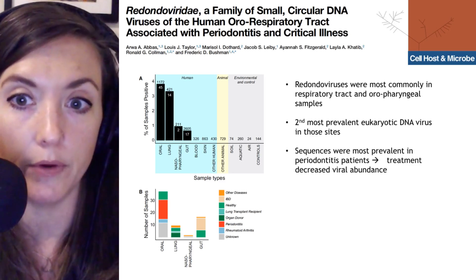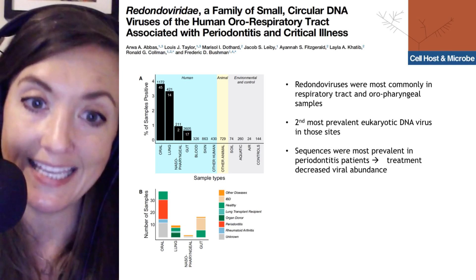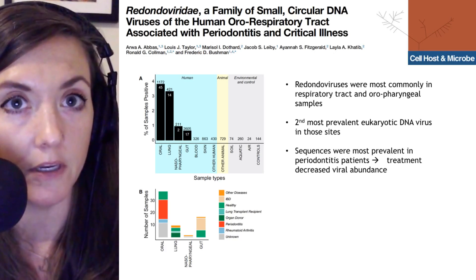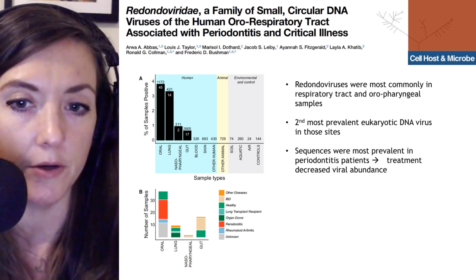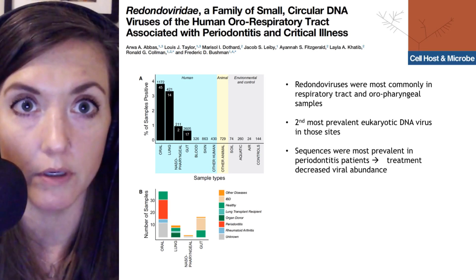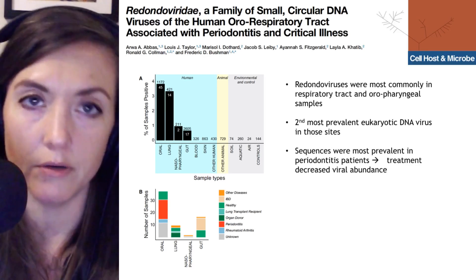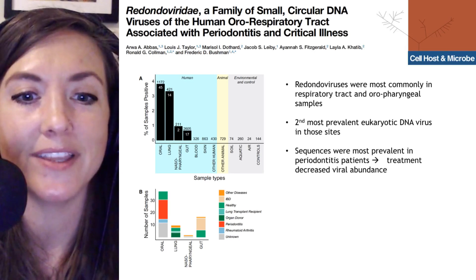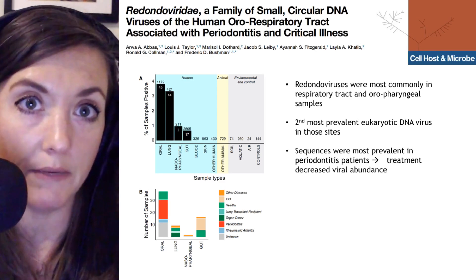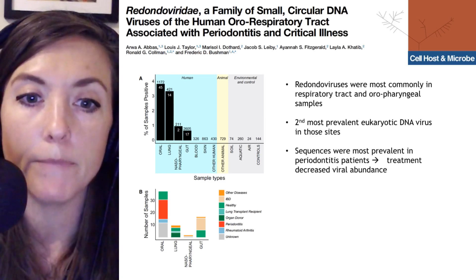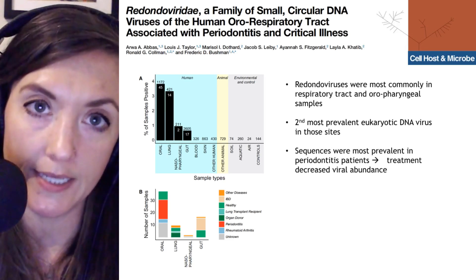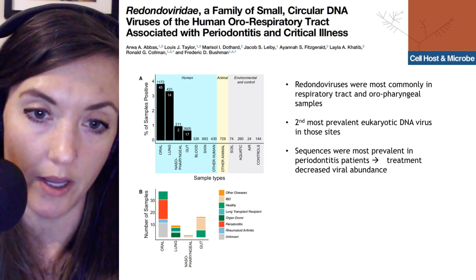The redondoviruses were the second most prevalent eukaryotic DNA viruses at these sites — specifying eukaryotic because we also carry DNA bacteriophage that infect the bacteria in our microbiome. Looking at patient qualities, some redondoviruses were found in healthy individuals, shown in green in the bar graphs, but the most prevalent condition was patients with periodontitis, shown in the red bar in the oral samples.